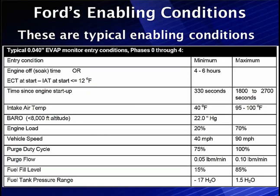Intake air temperature at startup has to be between 40 and 95 degrees — in some cases as high as 100. The altitude must be below 8,000 feet — if you're on Pikes Peak, it's not going to run the test. Engine load has to be between 20 and 70 percent — it won't run at wide open throttle above 70. Vehicle speed has to be 40 to 90 miles per hour. Purge duty cycle ranges between 75 and 100 percent, and fuel level must be 15 to 85 percent. If the tank is over 85 percent, the air space at the top is very small and makes the vacuum decay calculation very difficult. Below 15 percent, it's mainly air with no fuel, making it very hard to estimate how fast the vacuum decay should be.